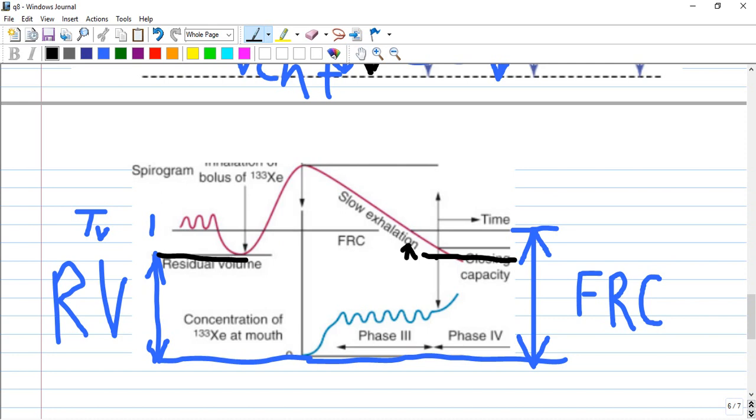So it is a small volume just above residual volume. And when it is going down it is close to closing of all the respiratory alveoli.